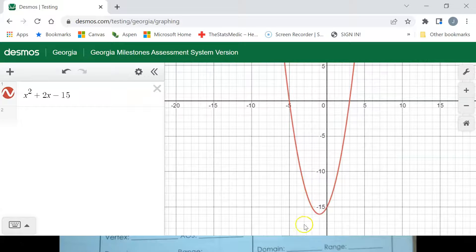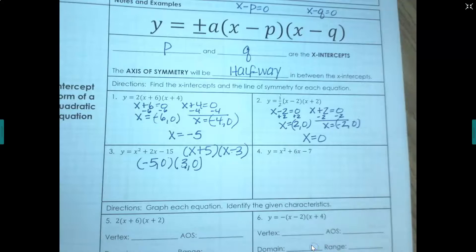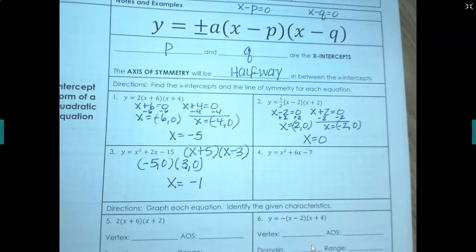Scroll out some so we can see it. Here's my vertex at negative 1, 16. So my axis of symmetry is at negative 1. So I'm going to say x equals negative 1.